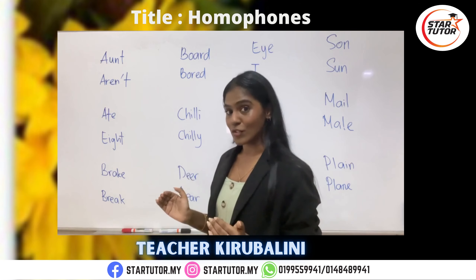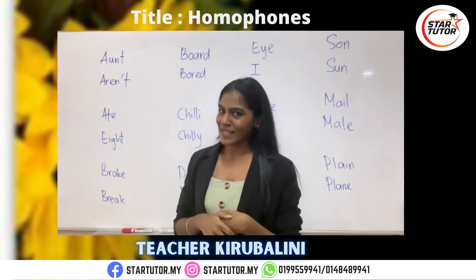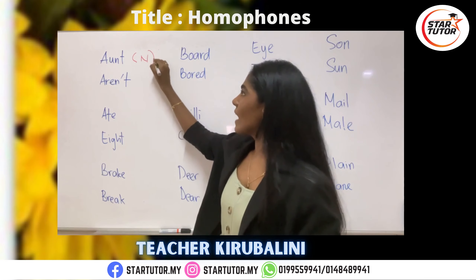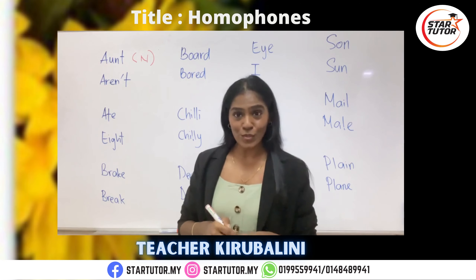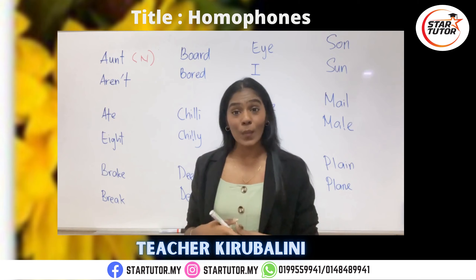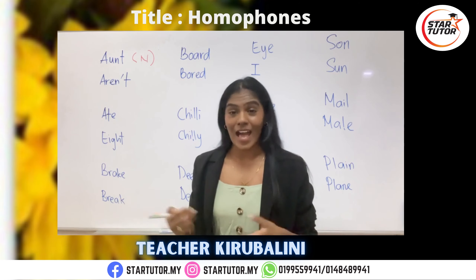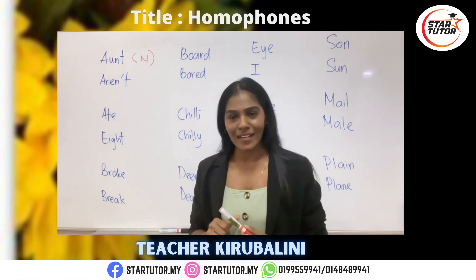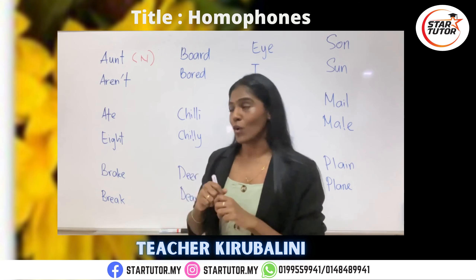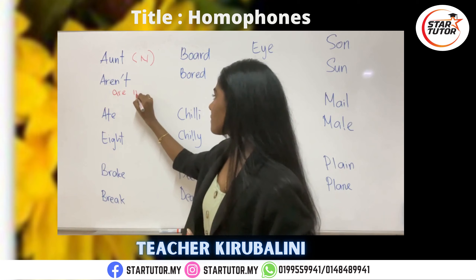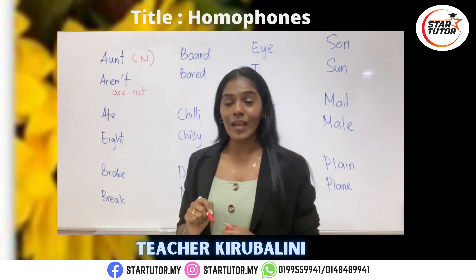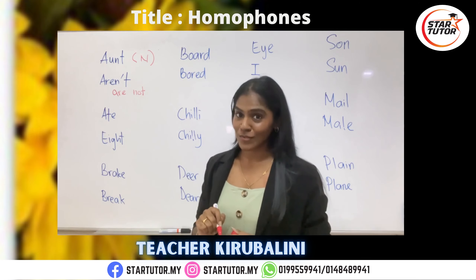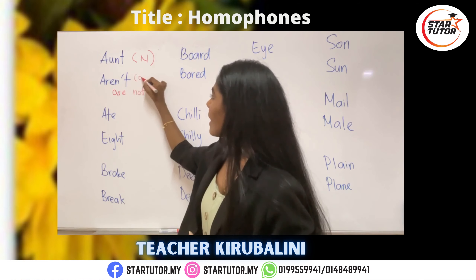First, you have the word 'aunt' and you have the word 'aren't'. Now, what is the difference? First of all, the word 'aunt' is a noun that you are most likely to use to call your mom's sister. But here, we always practice calling a random lady as auntie or aunt. The next word, 'aren't', is actually a contraction of the words 'are not'. When you contract 'are not', you would get the word 'aren't'. So, aunt and aren't — this is a contraction.